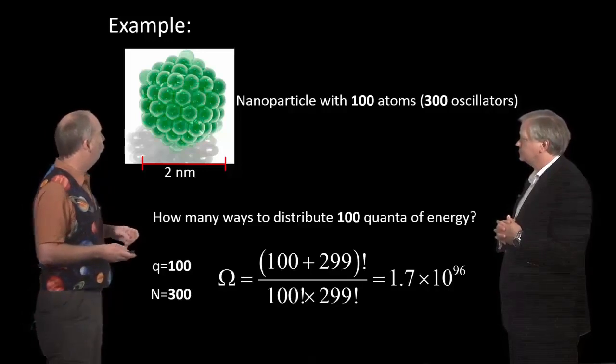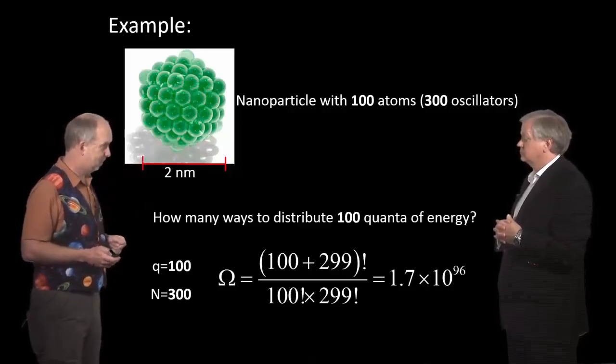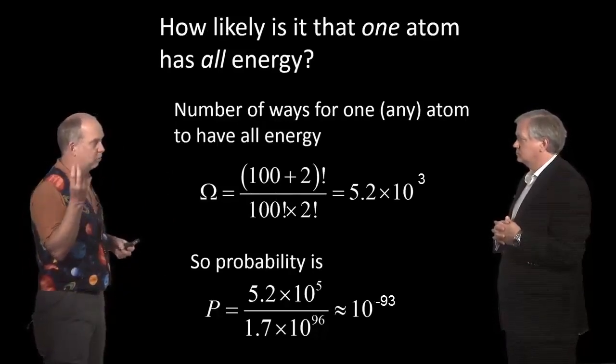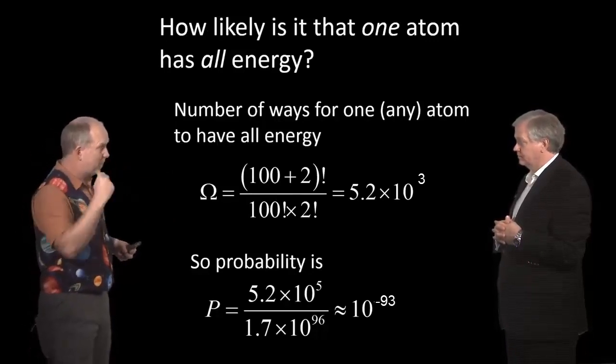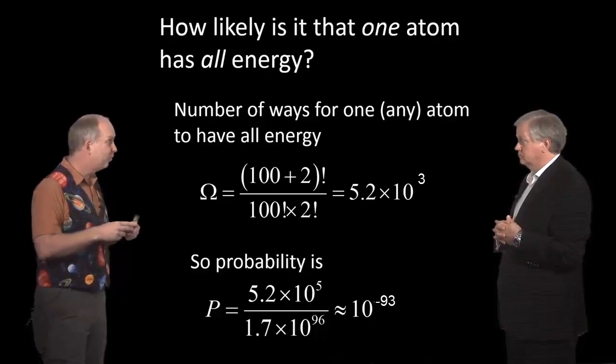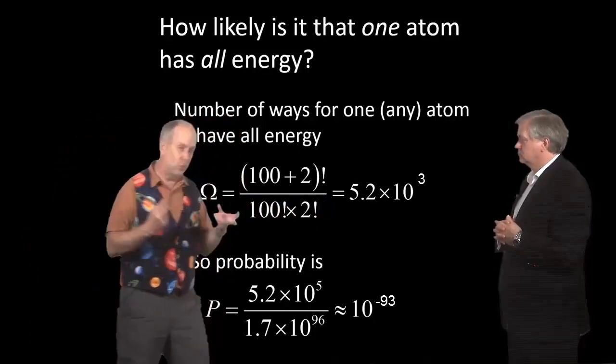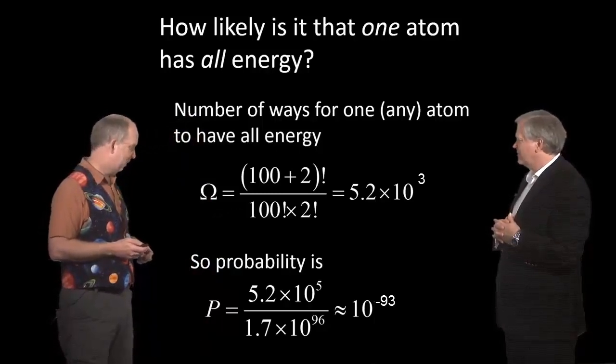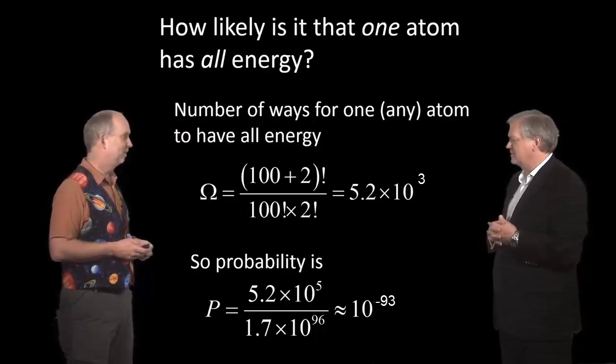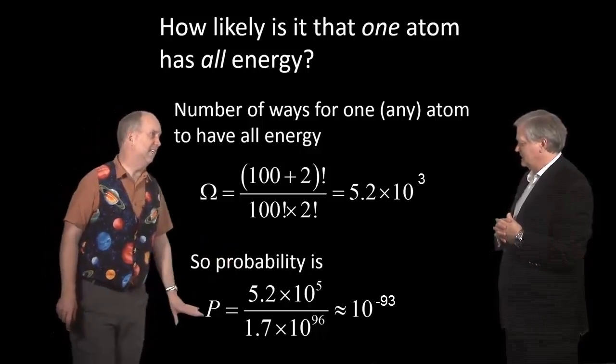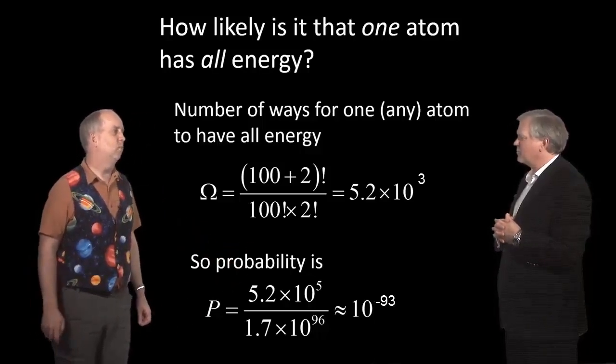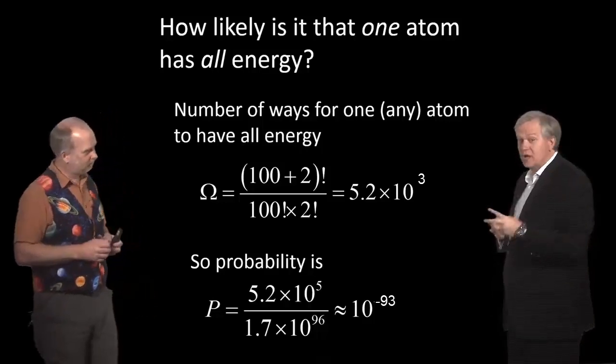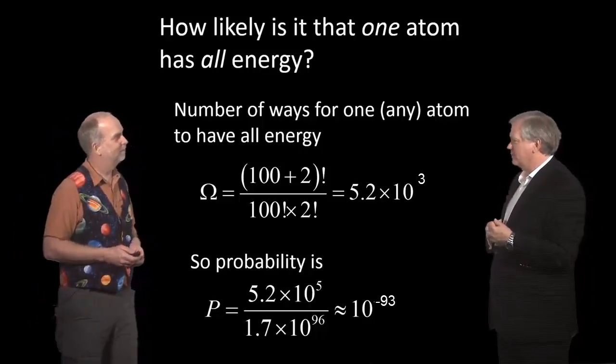So let's ask, for example, what are the odds that all 100 quanta are in one of the atoms? So you've now got 3 oscillators, so 2 boundaries and 100 quanta, and there's quite a lot of ways you can arrange those—about 5 times 10 to the 3 possible ways to arrange 100 quanta in one atom. But that's still an awful lot less than the 10 to the 96. So it's 500 chances out of 10 to the 93 possibilities. So you're about 10 to the minus 90. That's like less than the number of atoms in the universe, drastically less. So that is very unlikely. Not impossible, but you wouldn't want to be waiting up for it.